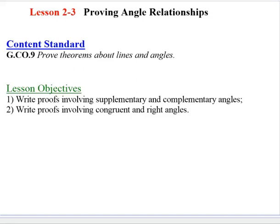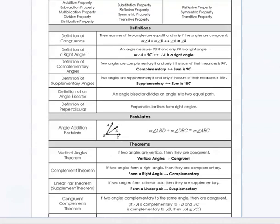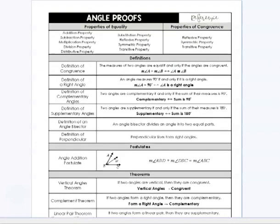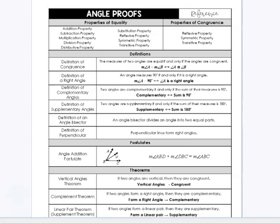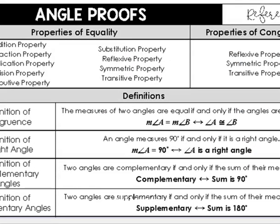In lesson 2-3, we are leaving our work with segment proofs and now we're going to be looking at angle proofs, or as our lesson title says, we're going to be proving angle relationships. Let's get started with what we can use as references to justify the reasons for these angle proofs. Some of these we've used already quite a bit in our segment proof work and in our algebraic proof work.